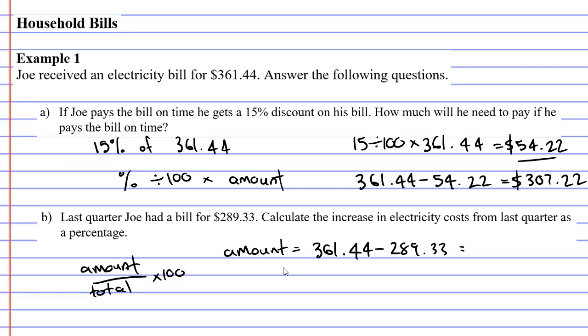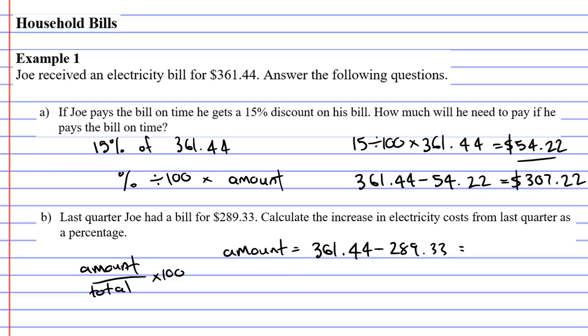$361.44 minus $289.33, and that comes out to $72.11. So the bill has increased by about $70, and we're going to write this as a percentage.